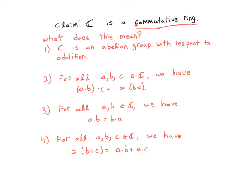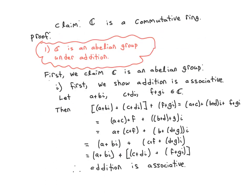So I'm only going to prove distributivity on one side. Also note, when we use the word commutative as an adjective for ring, we are talking about the multiplication and not the addition, because the addition is commutative by default. All right, so let's do this proof.